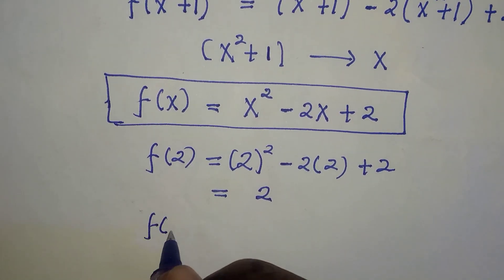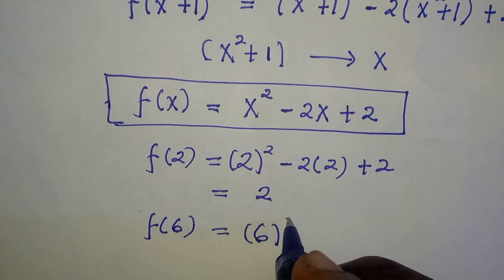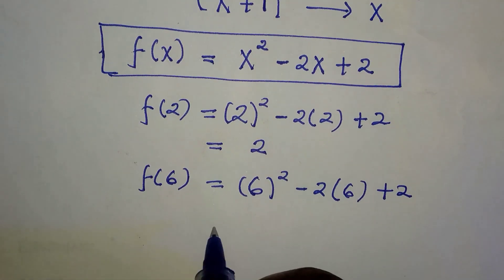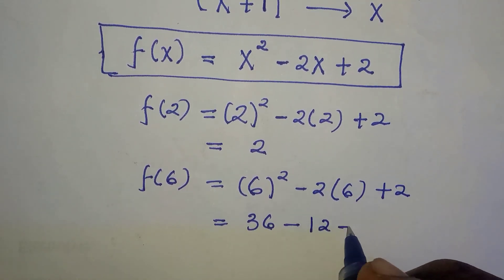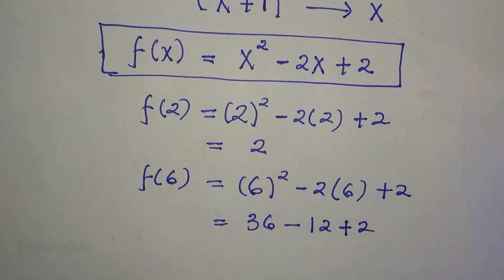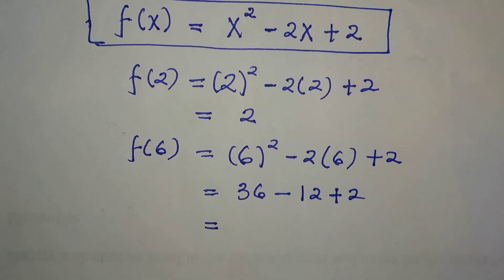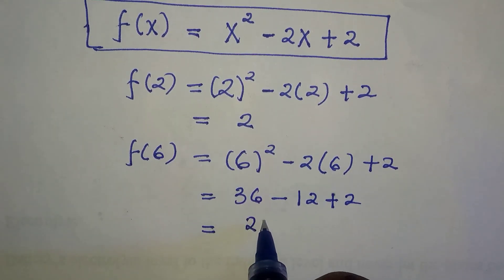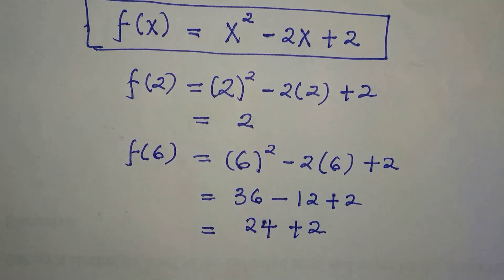For the second one which is f(6), we are going to have 6 raised to power 2 minus 2 times 6 plus 2. 6² is 6 times 6, that is 36 minus 12 plus 2. By subtracting and adding, 36 minus 12 first we are going to have 24 plus 2, and 24 plus 2 is equivalent to 26.